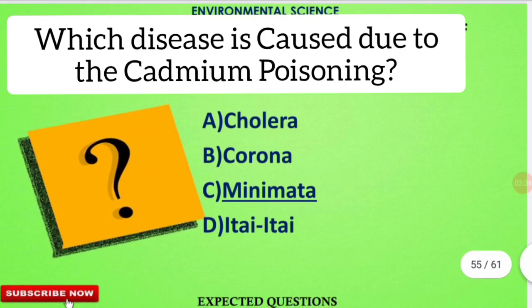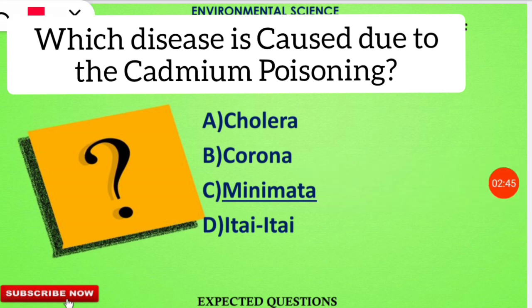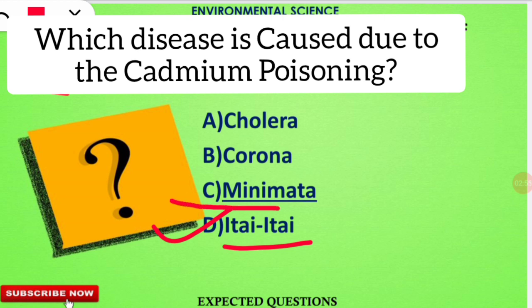The next question is: which disease is caused due to cadmium poisoning? The correct option is option D — the Itai-itai disease, also called the 'ouch-ouch' disease, which was first discovered in Japan, is caused due to cadmium poisoning. Please write in the comments which element's poisoning causes Minamata disease.